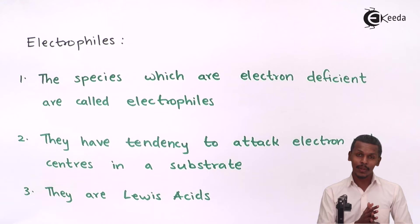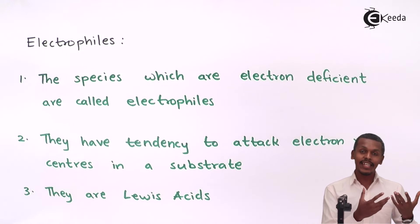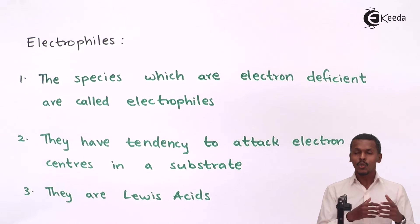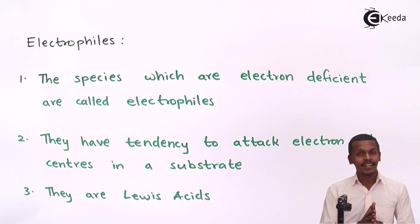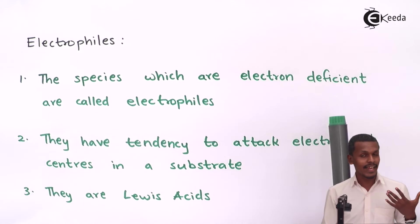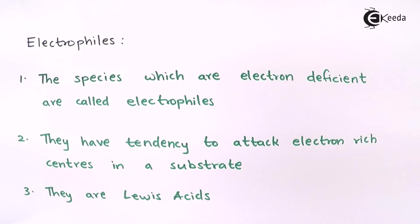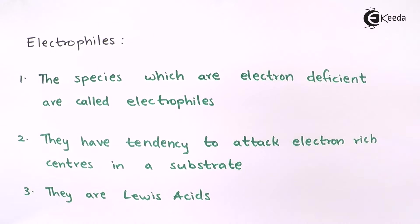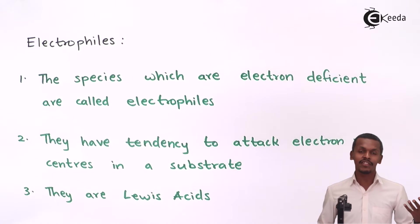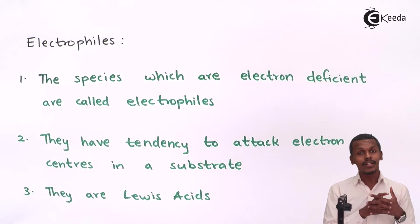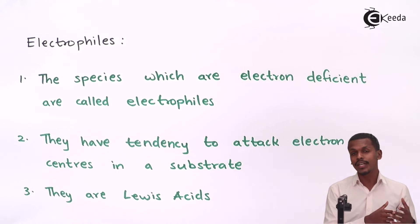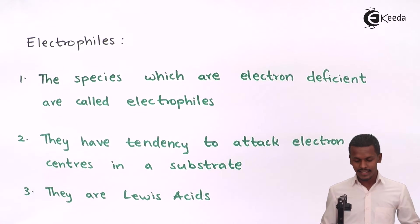The name 'electrophile' means attracted towards electrons — attracted towards negatively charged species. Who is attracted towards negative charges? The one that is itself positive. So electrophiles carry a positive charge and are electron deficient. They have the tendency to attack electron-rich centers in a substrate, and that is why they are called Lewis acids — because they attract electron-rich species.